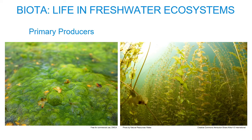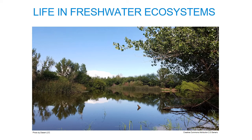Now that we've defined freshwater ecosystems, looked at the different types, and considered how they're interconnected with the terrestrial landscape, let's explore the many forms of life inhabiting them. Aquatic plants use the energy of sunlight to synthesize water, carbon dioxide, and nutrients into energy-rich organic compounds, ranging from algae to large macrophytes. They're primary producers and form the base of food chains in freshwater ecosystems. Larger plants are also important components of the physical structure, serving as habitats for other organisms, slowing the velocity of flowing water, and facilitating the deposition of suspended sediments.